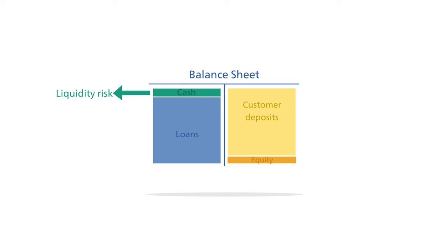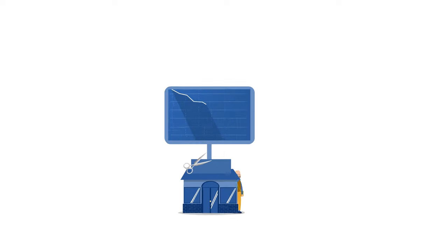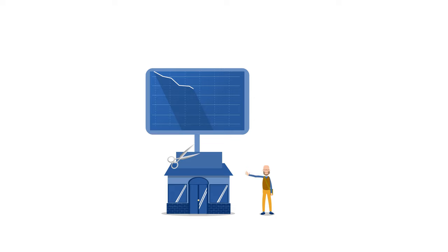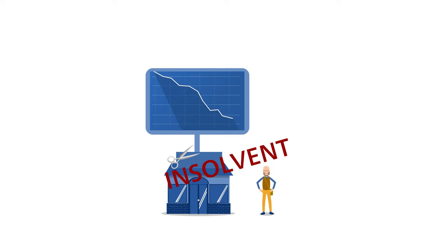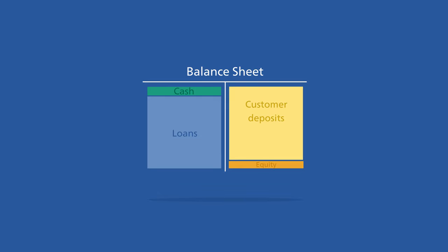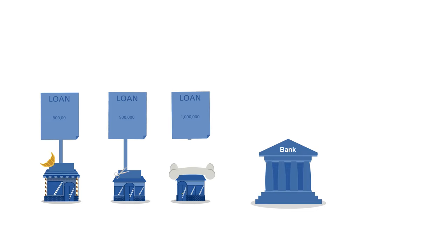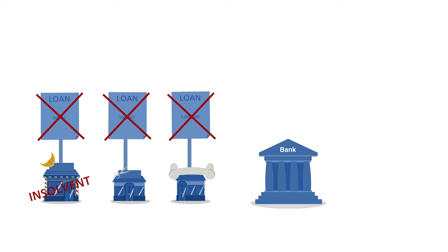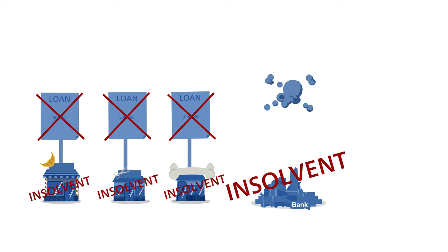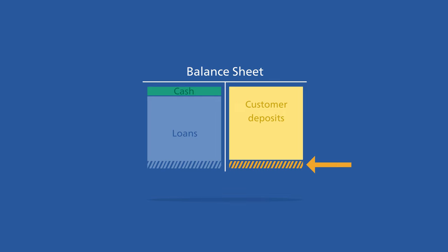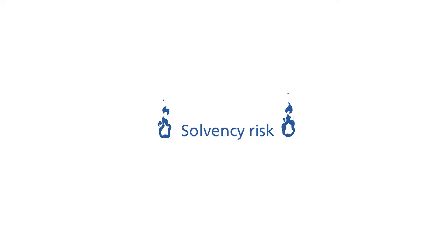The second important risk is the solvency risk. When a company suffers losses, these must be borne by the equity providers. If the losses are too high, a company may become insolvent — its liabilities then exceed its assets. In the case of our simple bank, such losses can arise when the value of claims on loans drops, which reduces equity capital. If banks have given many loans to companies that become unable to repay their debts due to an economic crisis, this can cause the banks to become insolvent. Because the equity capital of typical banks is rather low, the risk of being unable to absorb all the losses is relatively high, making solvency risk in banking significant.